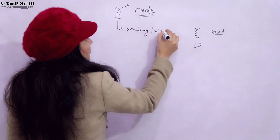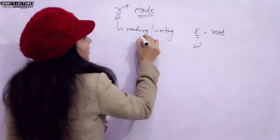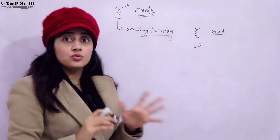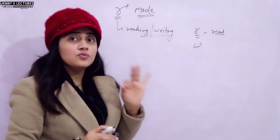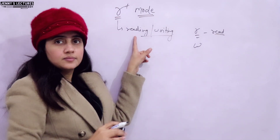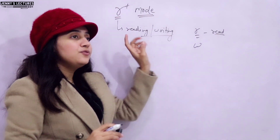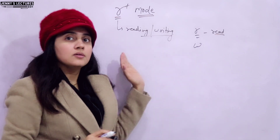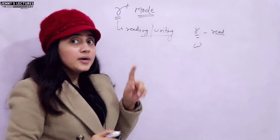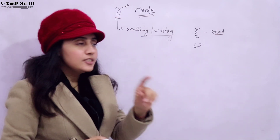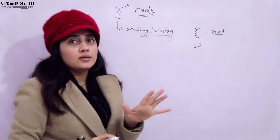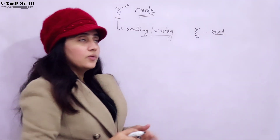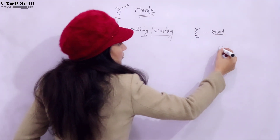R plus mode is for both reading and writing — it opens the file for both. The main purpose of r plus mode is reading. If the file exists, it opens it for both reading and writing. But if the file doesn't exist, it will not create a new file. This is important to remember.